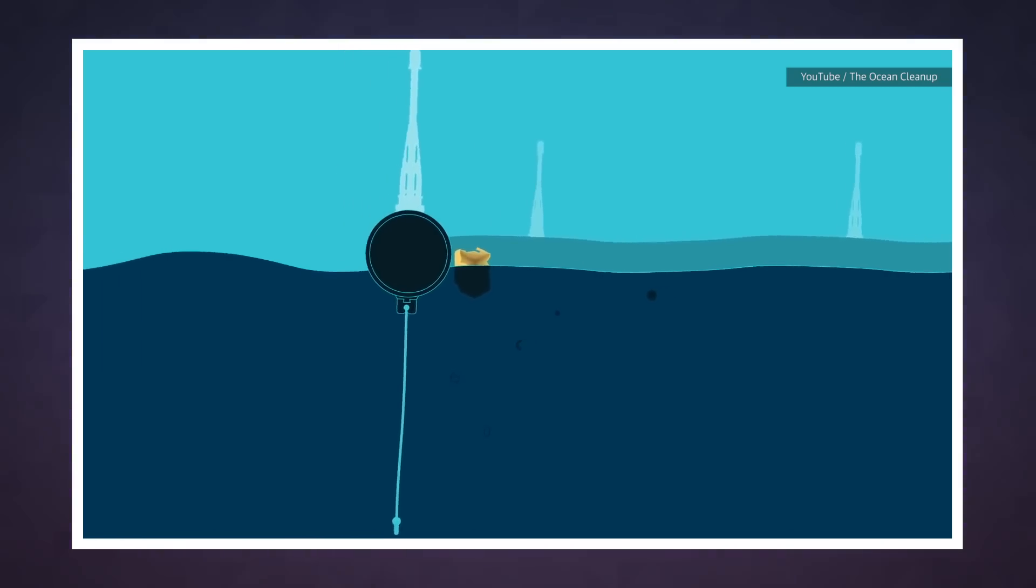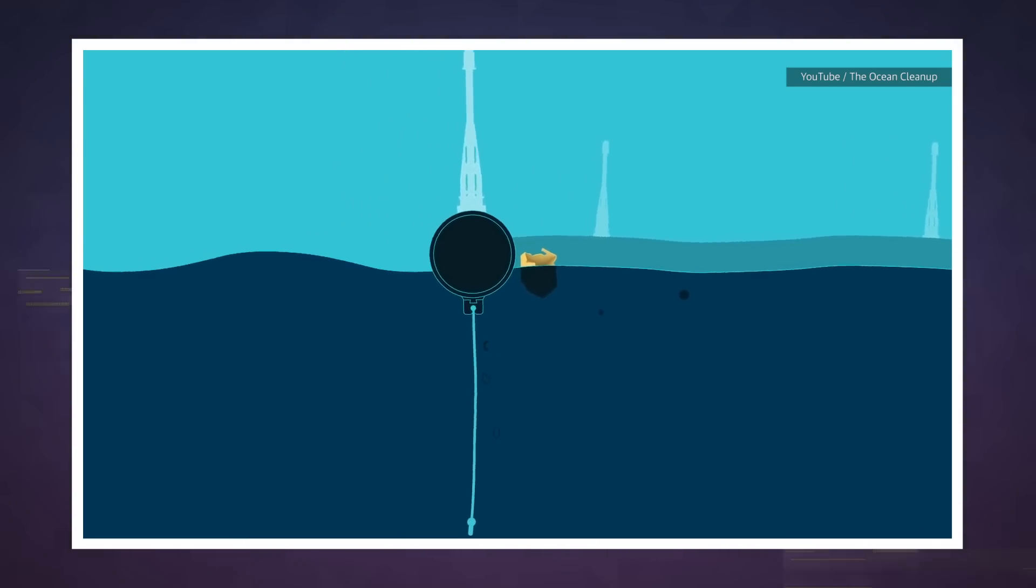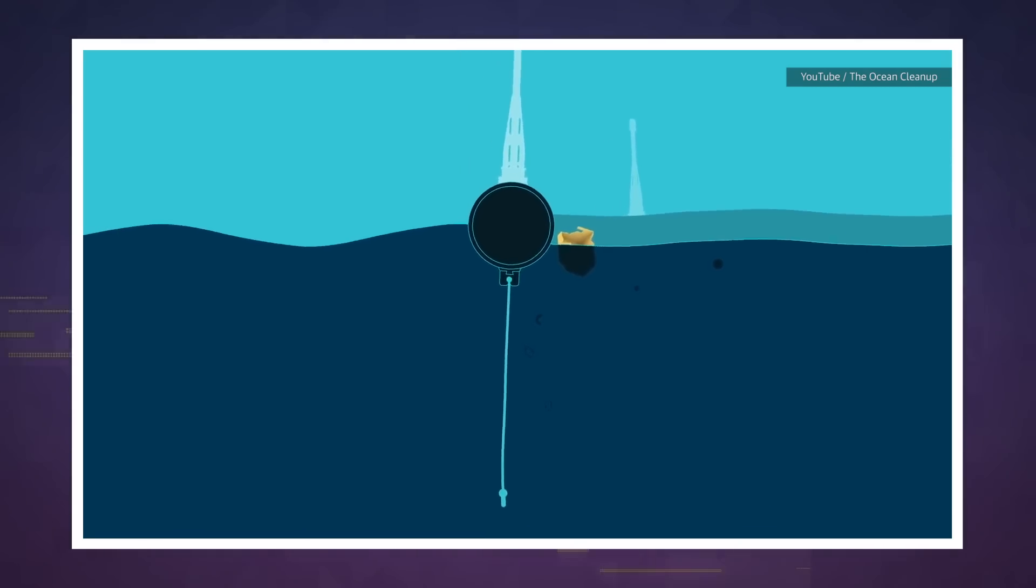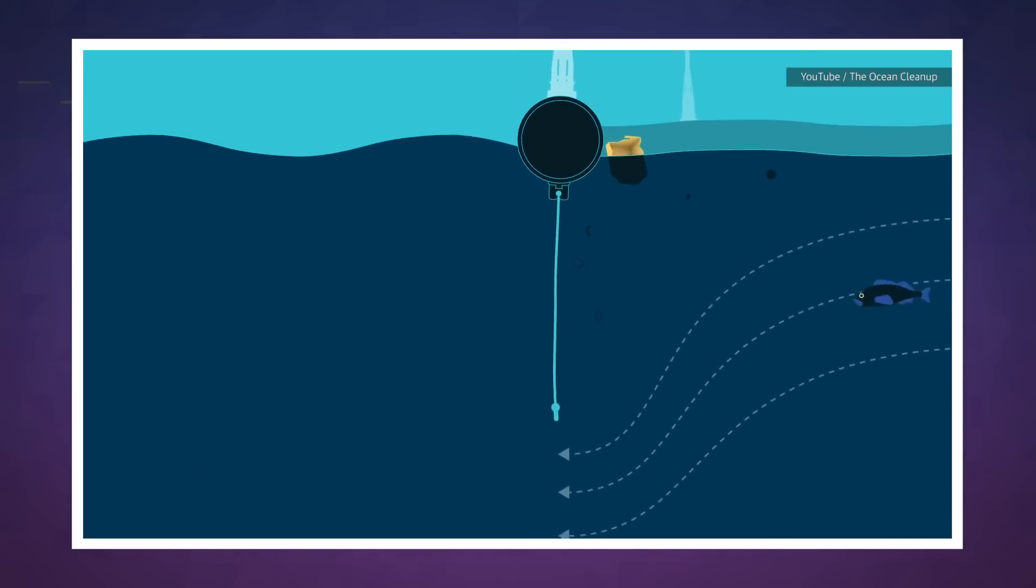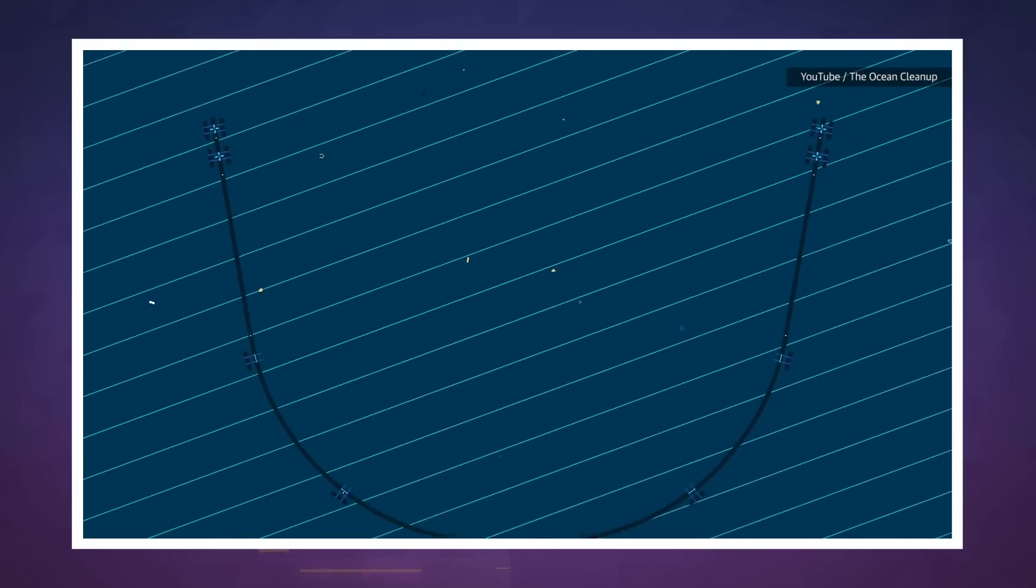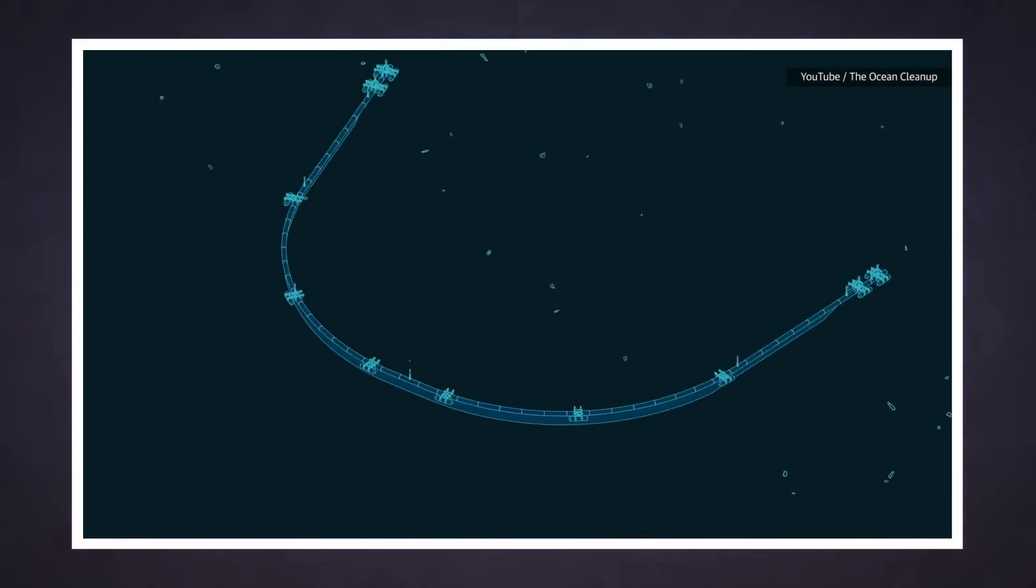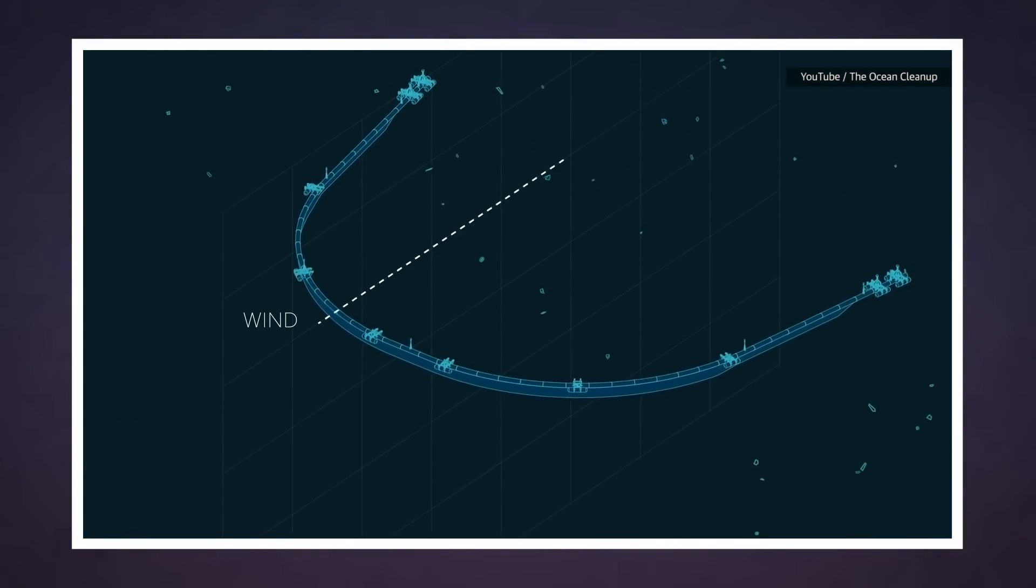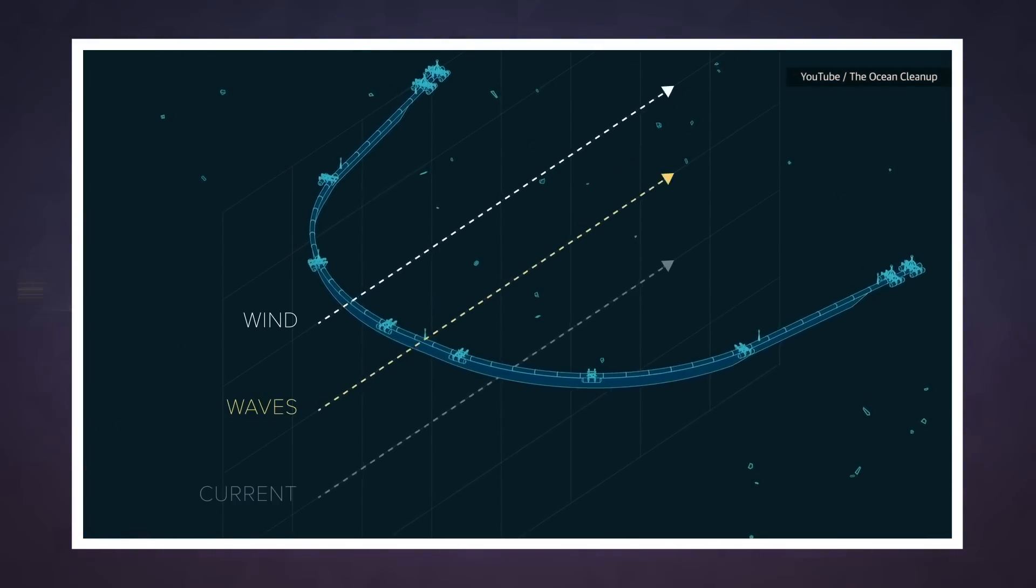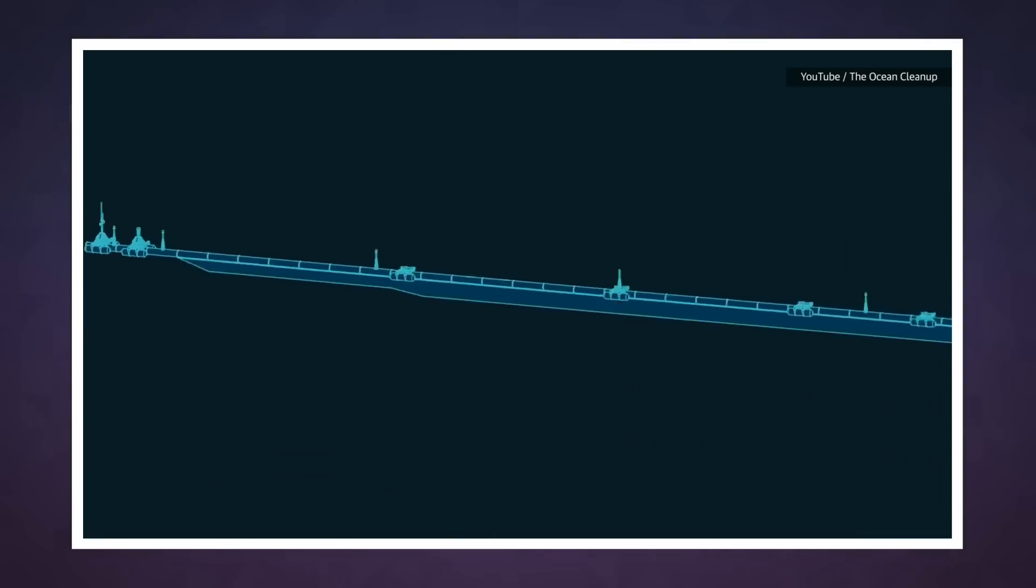After it has collected enough debris, smaller boats will gather the plastic and take it to shore for recycling. During the trial, the whole thing will be monitored very closely to make sure it extracts plastic but not plankton and other crucial marine life. It will also be an important durability test. The boom will need to survive rough seas and storms so that it doesn't become plastic waste itself.